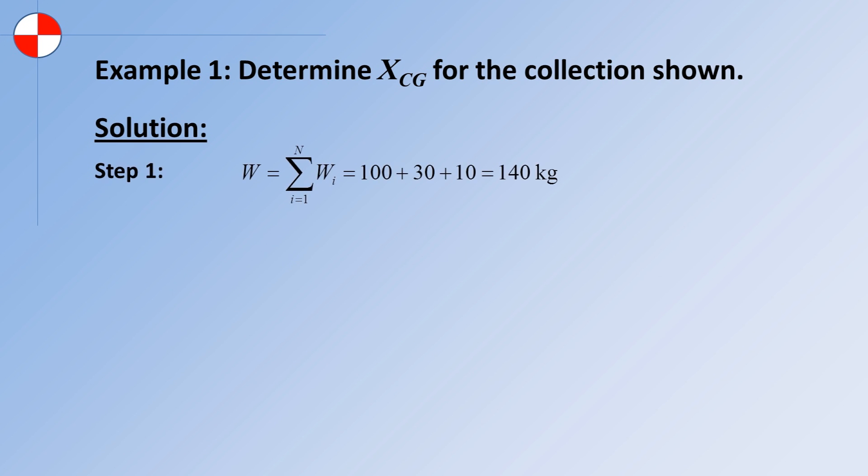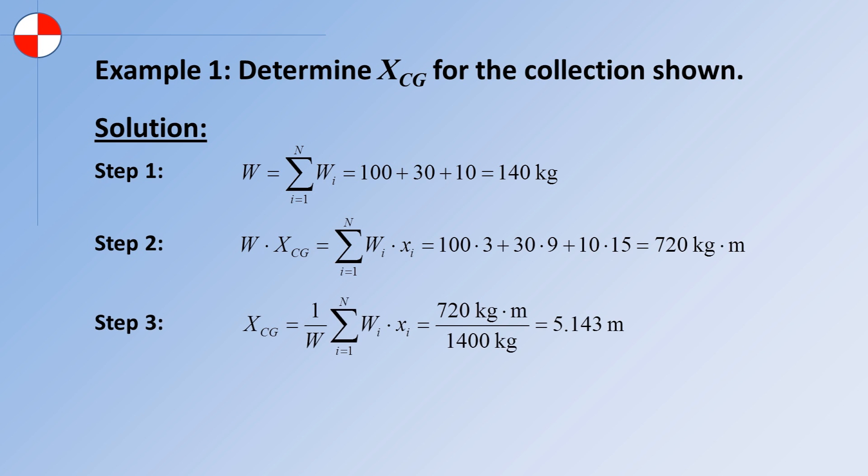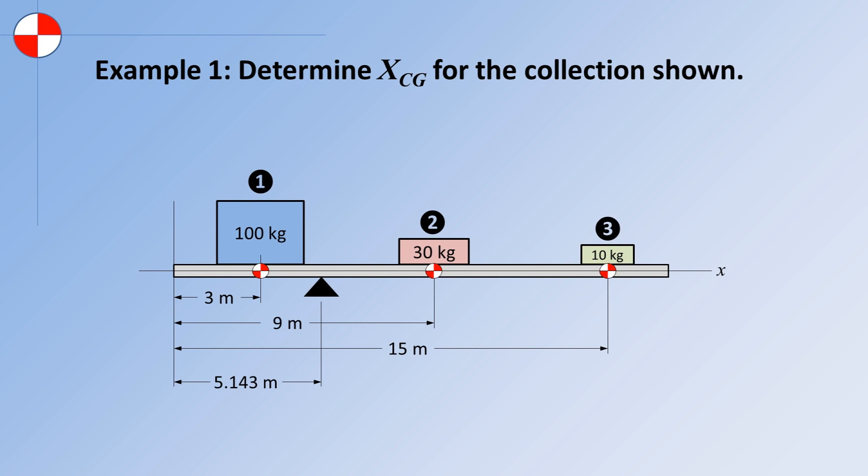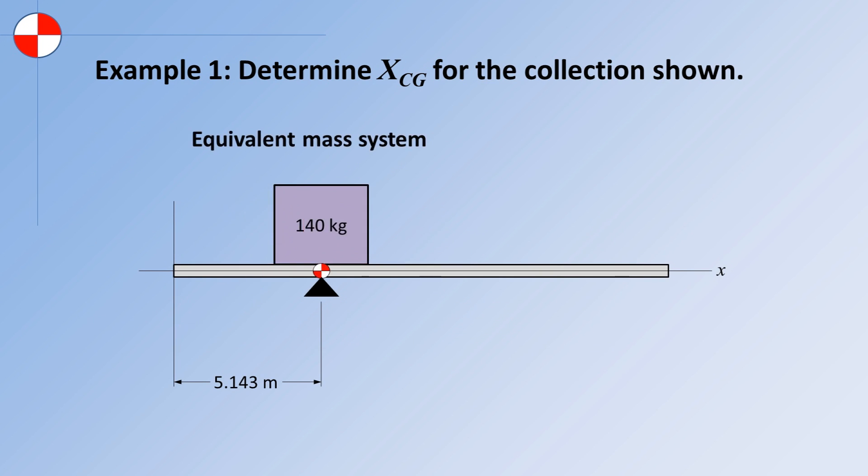This is how we do it. Step 1. Calculate the total mass. Don't let it bother you that I use W here rather than M for mass. That's just for consistency. Step 2. Calculate the total mass moment. Step 3. Calculate the center of gravity. This means that if we place a hinge point 5.143 meters from the left edge, the beam will be balanced. The equivalent system is shown.